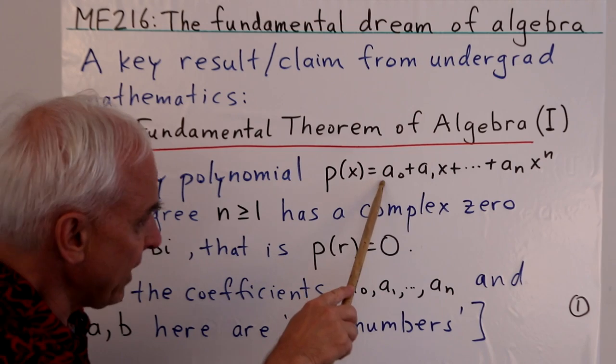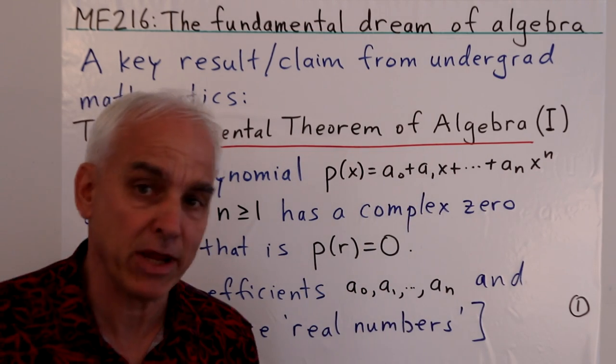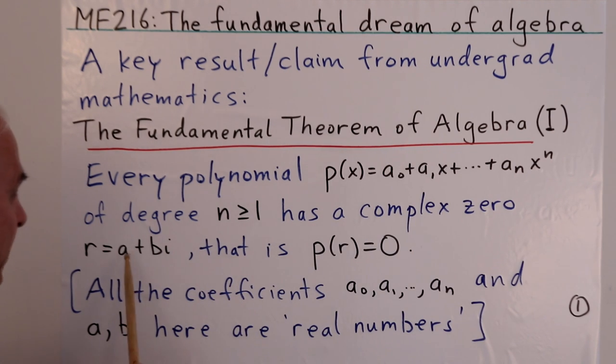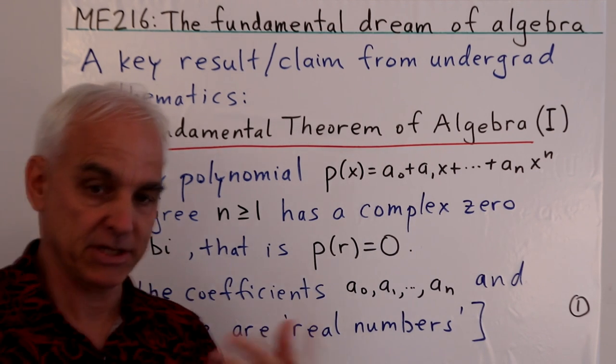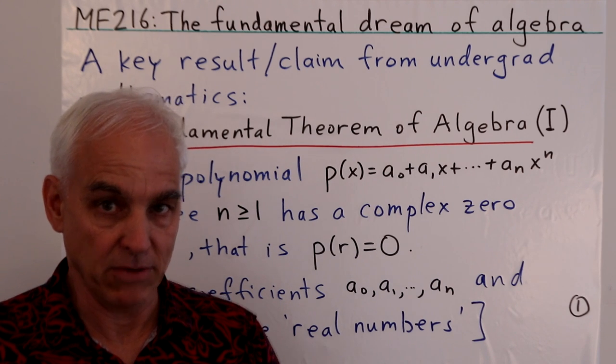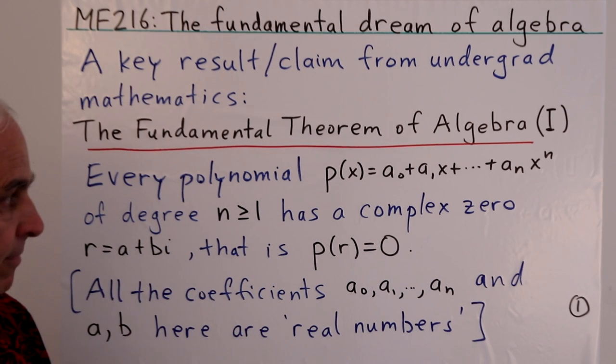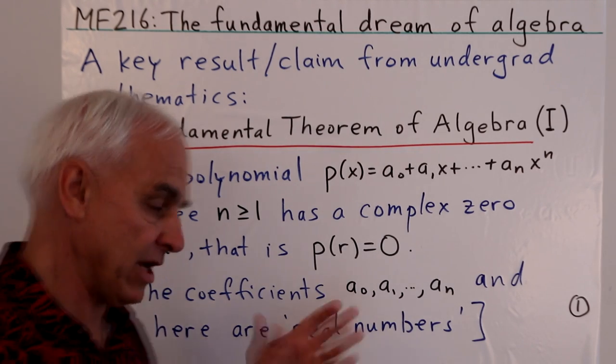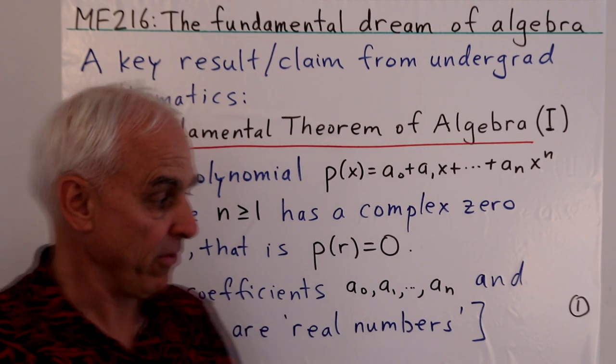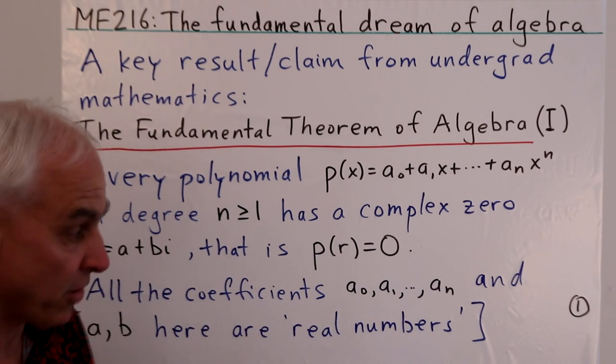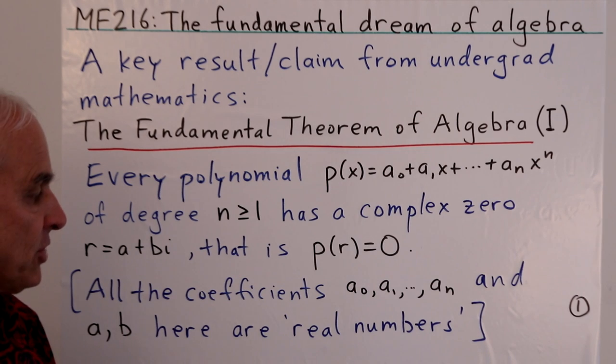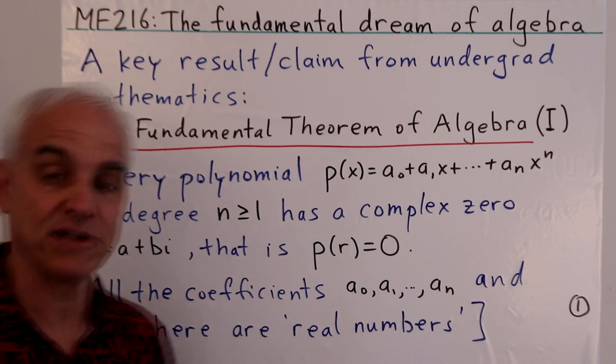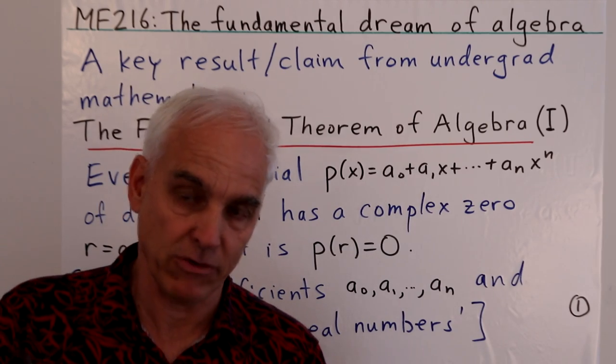Now we have to understand that these coefficients appearing here are usually taken to be real numbers, and the a and b appearing in this description of complex numbers are also taken to be real numbers. Now that of course is hugely problematic, because there's all kinds of difficulties with the theory of real numbers. That's a big part of the problem, but there's more as well. This is the first version of fundamental theorem, that every non-constant polynomial has a complex number zero or root.